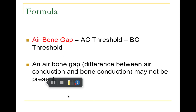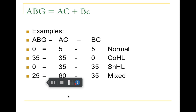The air-bone gap helps demonstrate the conductive versus sensorineural component. The formula is: air-bone gap = air conduction threshold minus bone conduction threshold, calculated for each frequency tested. There may or may not be a gap. Example one: at 1000 Hz, air conduction threshold is 5 dB and bone conduction threshold is 5 dB. Both are within normal range — any threshold of 20 dB or better is normal. Five minus five equals zero — no gap, both scores normal. Hearing is normal.